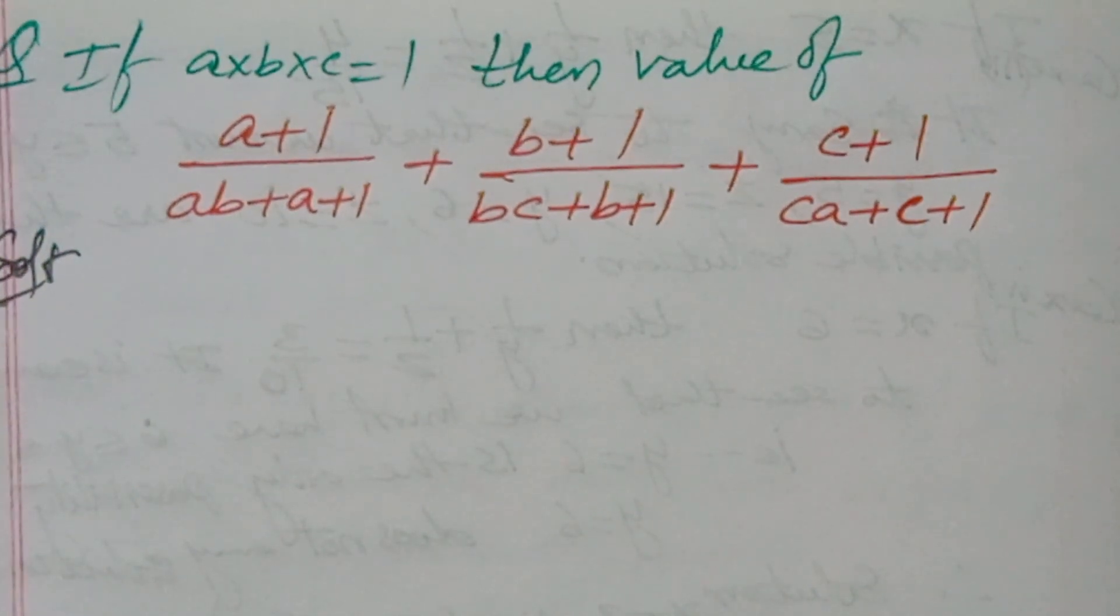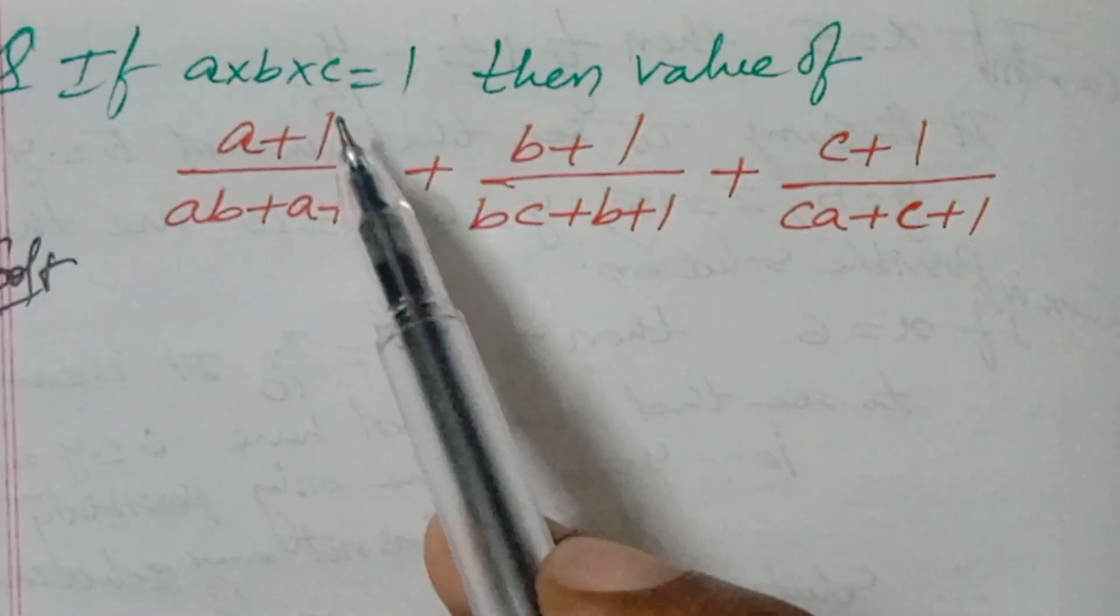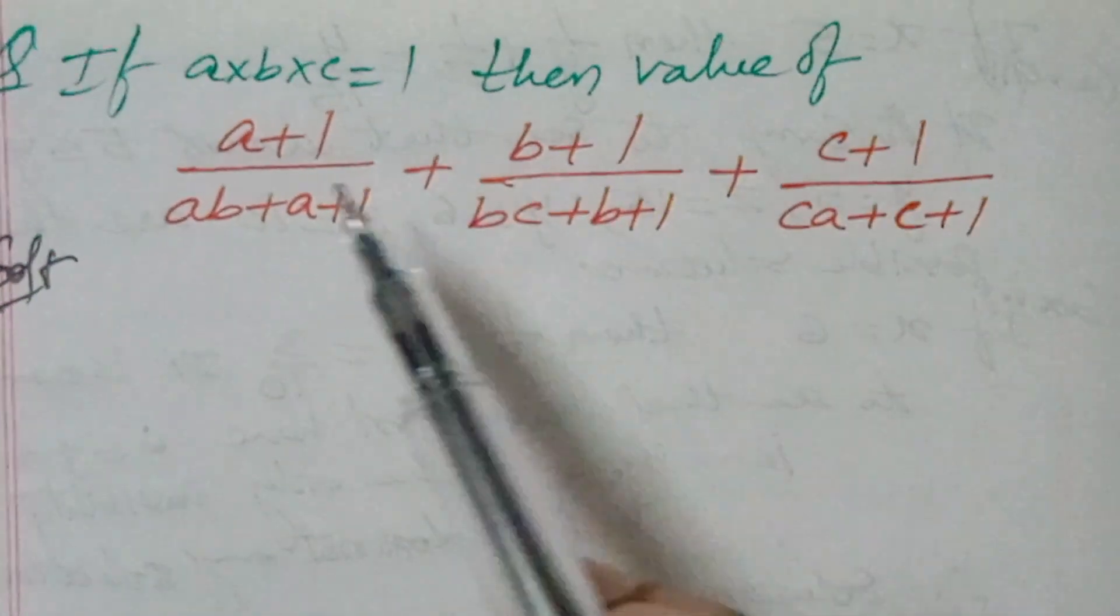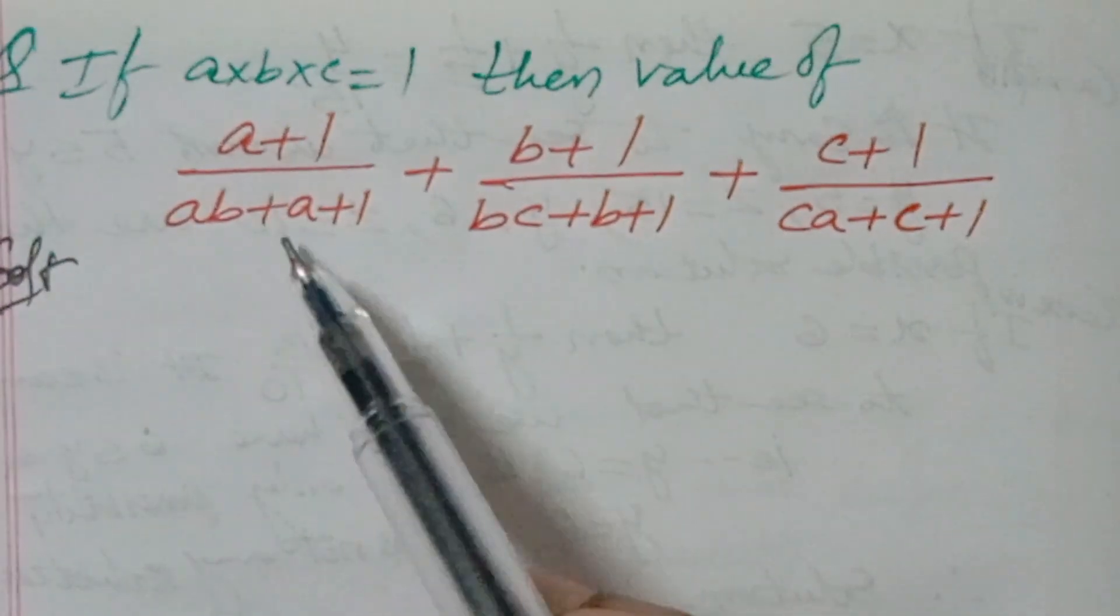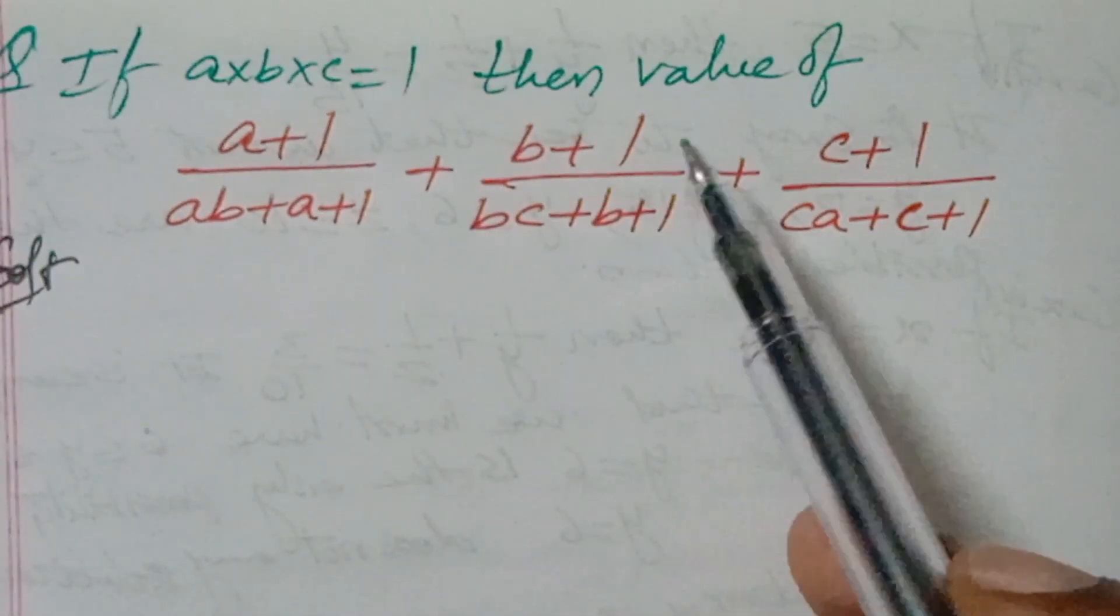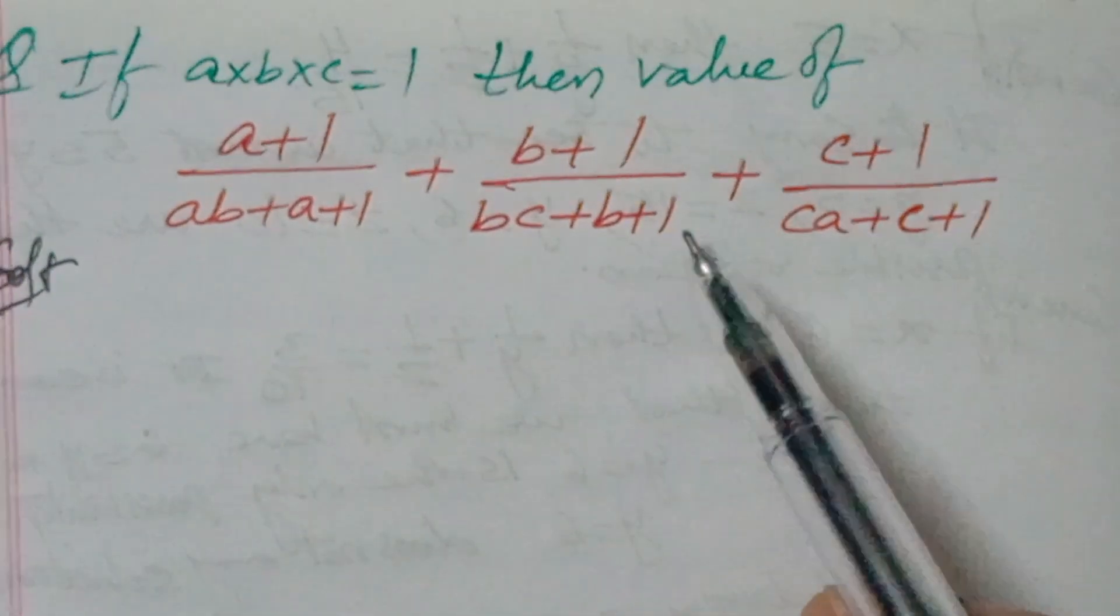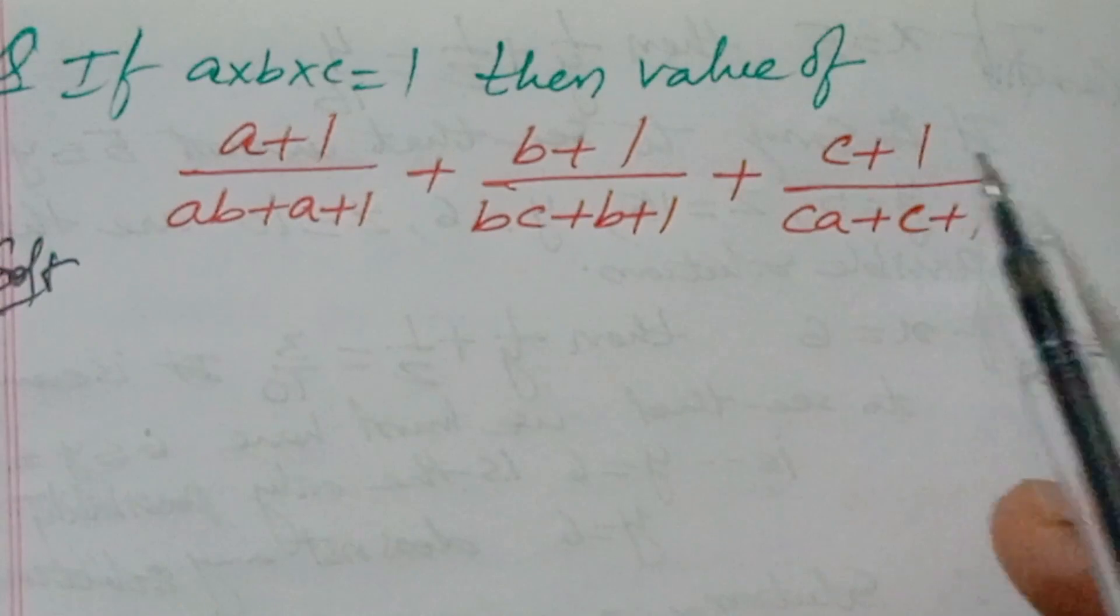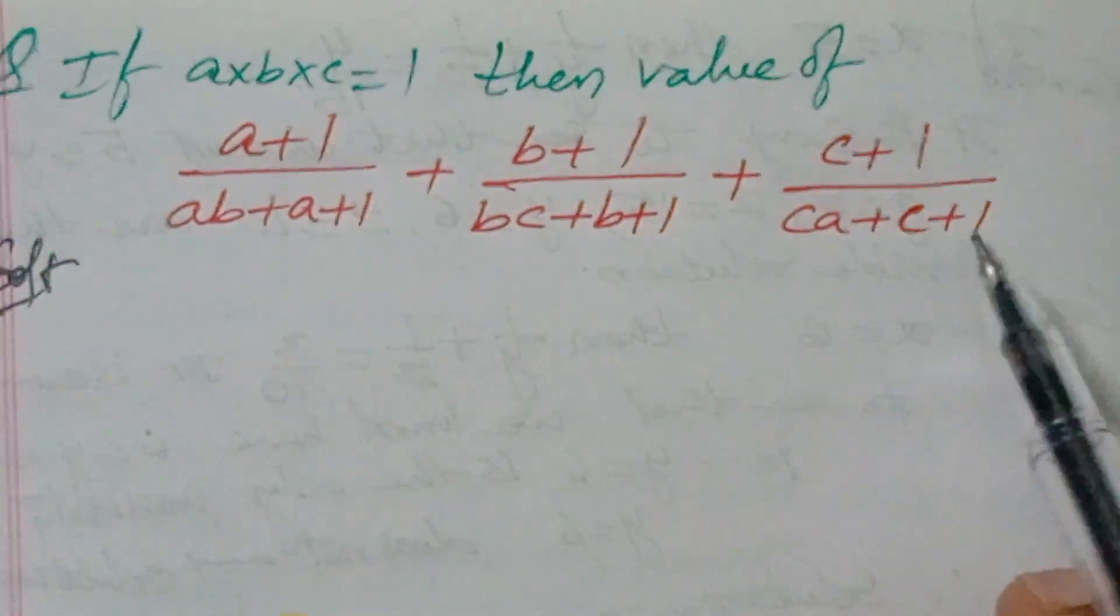Hello, welcome back to NCG Max. Today we're looking at a logical problem. The question is: given abc equals 1, then find the value of a plus 1 over ab plus a plus 1, plus b plus 1 over bc plus b plus 1, plus c plus 1 over ca plus c plus 1.